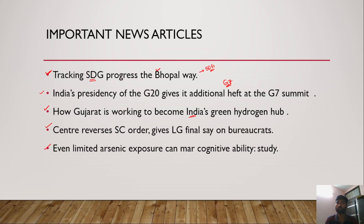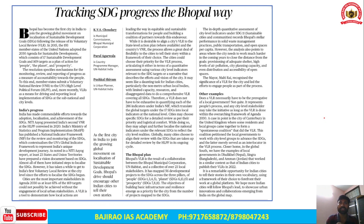The Ganga belt is highly contaminated with arsenic. Groundwater in states like West Bengal and Bihar is highly contaminated. We will understand all these articles in a detailed way, starting with the first important news article: tracking Sustainable Development Goals progress in the Bhopal way.